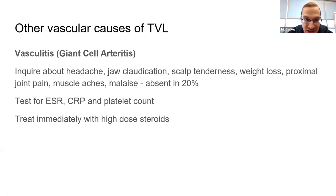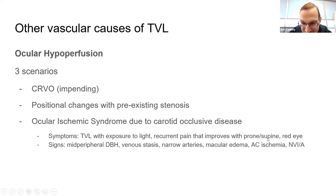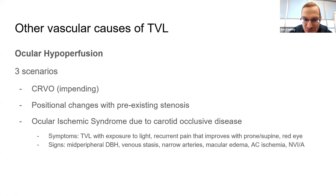Other causes to consider: giant cell arteritis, ocular hypoperfusion from CRVO, and ocular ischemic syndrome. Ocular ischemic syndrome is precipitated by exposure to light and can have positional qualities. You'll typically have a veteran with multiple vascular risk factors. Vasospasm is a diagnosis of exclusion, and hyperviscosity conditions like polycythemia can also cause transient vision loss.